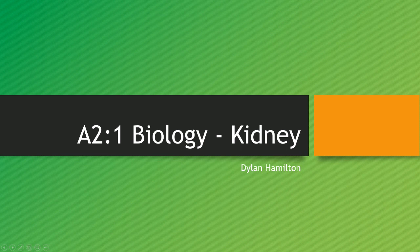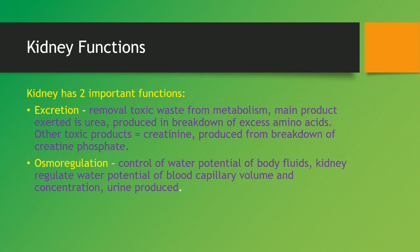Now let's move on to the kidney. The kidney has two important functions: excretion and osmoregulation. Excretion is the removal of toxic waste from metabolism. The main product is urea, which is produced from the breakdown of excess amino acids. Other toxic products include creatinine, produced from the breakdown of creatine phosphate. The second function is osmoregulation — the control of water potential of body fluids — as the kidney regulates water potential of the blood, capillary volume, and concentration where urine is produced. You can see how homeostasis ties into that with the control of water potential of body fluids.